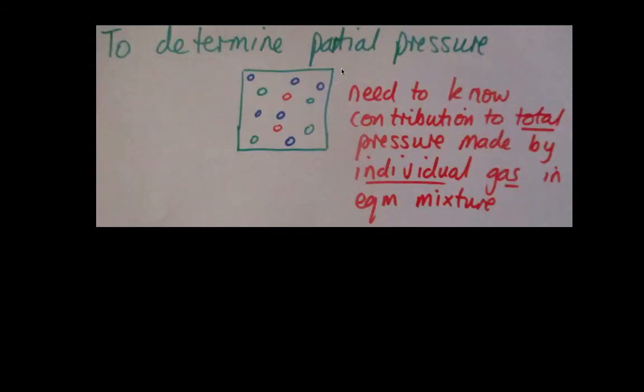Going back to our little picture here of our gases mixed together in a box. Here we've got blue, green and red gases all in the container. And, if we want to determine our partial pressure, we need to know the contribution to the total pressure made by the individual gas in an equilibrium mixture. But, to do that, we need to know how many of those moles, the total number of moles, came from a particular component.